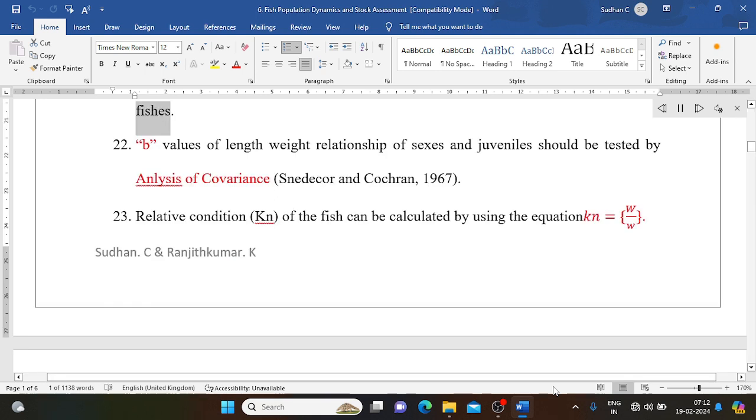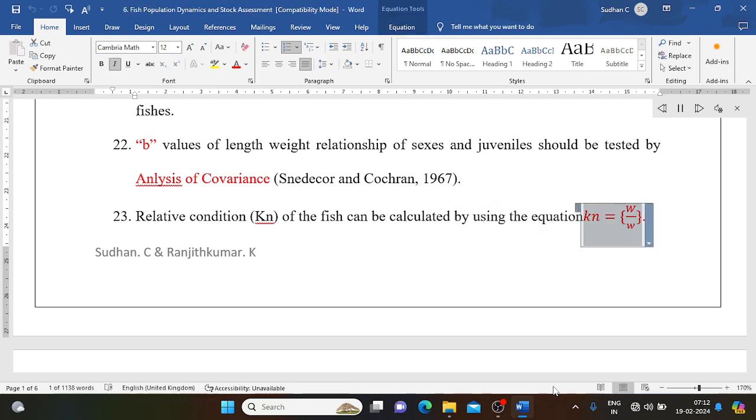Integrated method of Pauly 1983 can be followed to calculate the age and growth of fishes. B values of length-weight relationship of sexes and juveniles should be tested by analysis of covariance (Snedecor and Cochran 1967). Relative condition Kn of the fish can be calculated by using the equation: Kn equals W over w.